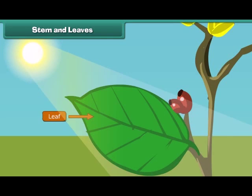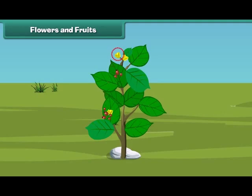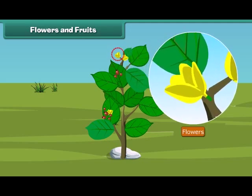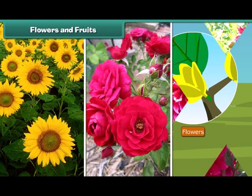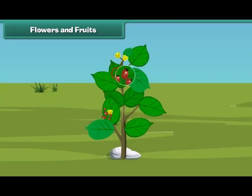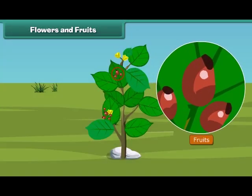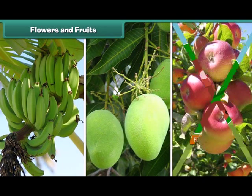Leaves are green in color and are born out of a stem. Now let us know about the most attractive and most beautiful part of the plant. Yes, that is the flower. Flowers are of different colors and types like sunflower, rose, and dahlia, and so on. I know that most of you also like fruits. Fruit is the juicy part of the plant. Fruits come in different shapes, sizes, and colors like banana, mango, apple, and oranges.